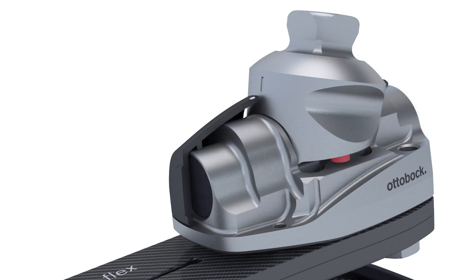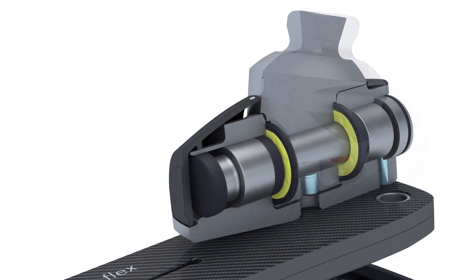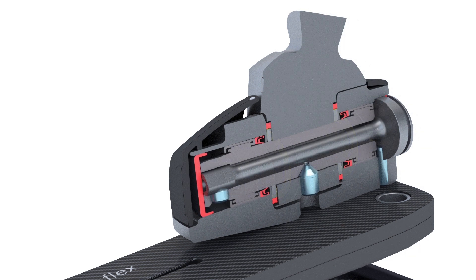Bumpers soften the end of the range of motion. Seals protect the internal mechanics against environmental conditions.